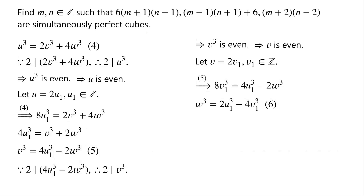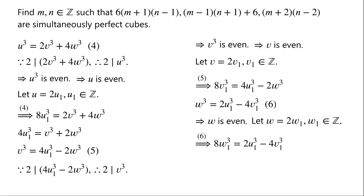Similarly, we know that w must be even. So we let w equal 2w₁, where w₁ is an integer. Substituting w equals 2w₁ in equation 6, we have 8w₁ cubed equals 2u₁ cubed minus 4v₁ cubed. Dividing by 2 and rearranging, we have u₁ cubed equals 2v₁ cubed plus 4w₁ cubed. We label this as equation 7.